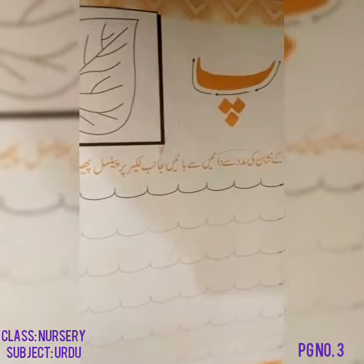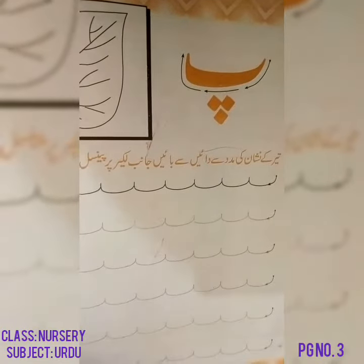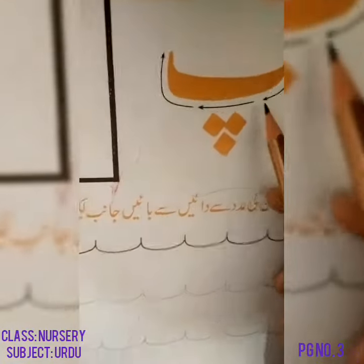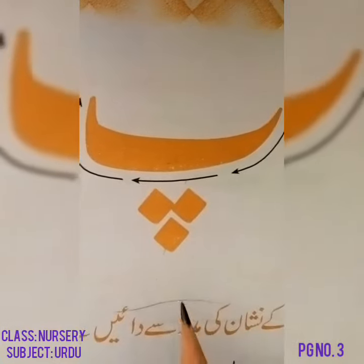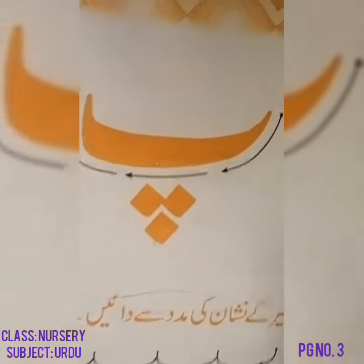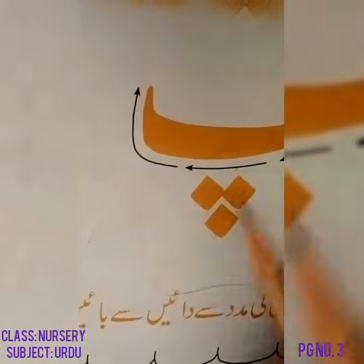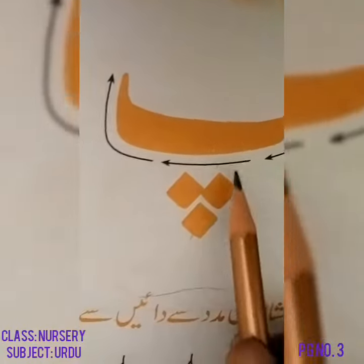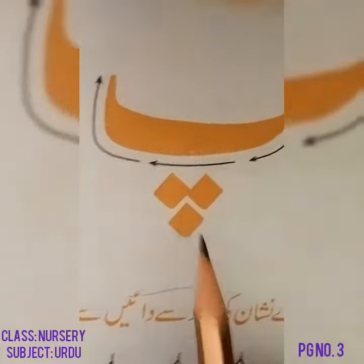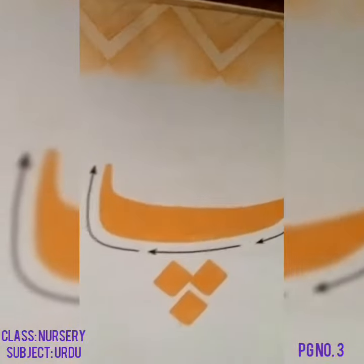Assalamu alaikum students, मैं Nursery class की Jipsa। आज हम Urdu Alphabet में Pe बनाना सीखेंगे। इससे पहले हमने Be बनाया था — Be की शक्ल कस्ती जैसी होती है, लेकिन Be के नीचे एक नुक्ता होता है। Pe के नीचे तीन नुक्ते होते हैं — दो इज़ाफ़ी नुक्ते और लगाते हैं। हर काम शुरू करने से पहले हम Bismillahir Rahmanir Raheem पढ़ लेते हैं। रब्बी ज़िदनी इलमा।